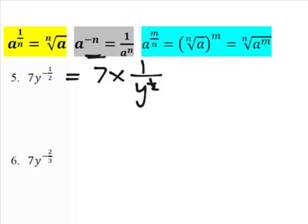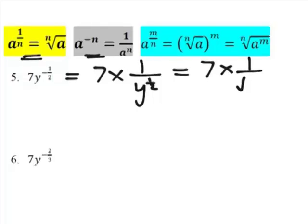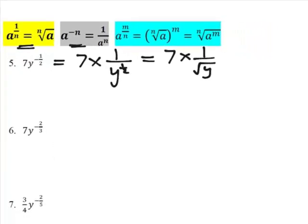Then we go to the first rule on the top left, where n is 2, so it's the second root. So it's 7 times 1 over root y. We don't bother putting in the 2.